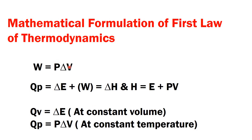Now, at constant volume, when the volume is constant, delta V will be equal to zero. In that case, heat absorbed or heat exchanged at constant volume will be equal to only the change in internal energy, because the volume change is zero. At constant temperature — that means isothermal process — change in internal energy is zero because internal energy is a function of temperature. When delta E is zero, heat exchange will equal the pressure-volume work done by or on the gas, based on expansion or contraction.